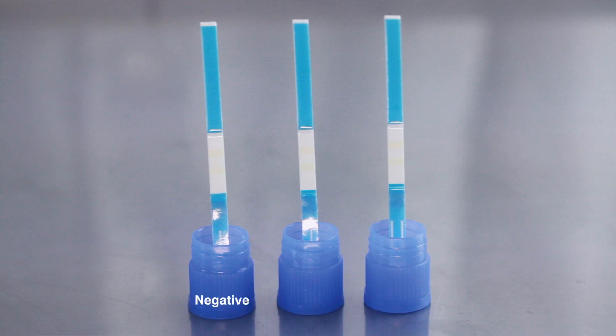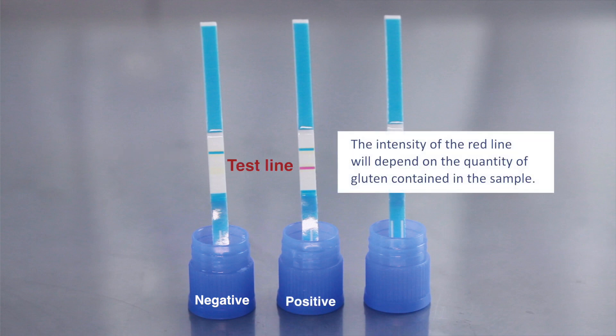For a negative result, a single blue line or control line appears in the central part of the test. For a positive result, a red line will appear below the blue control line.